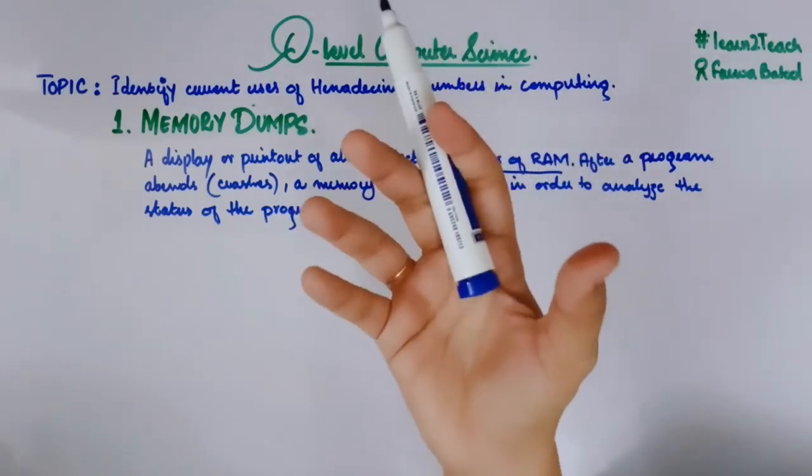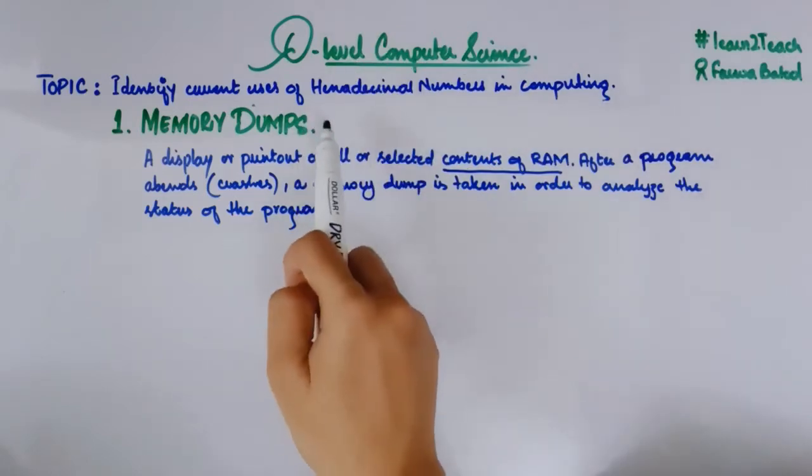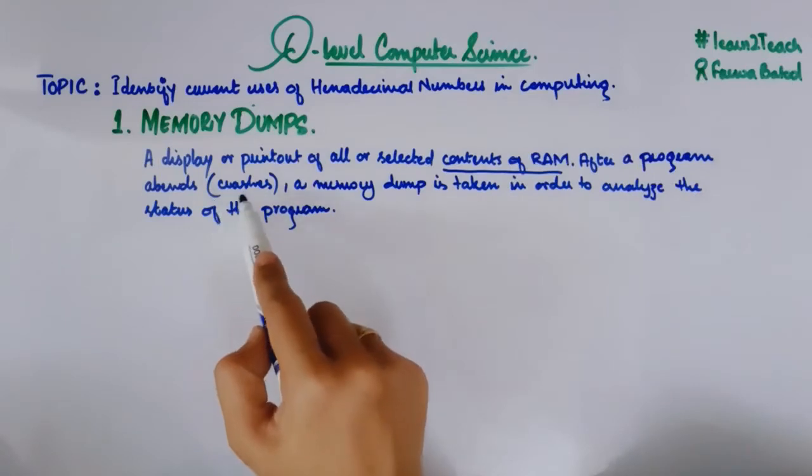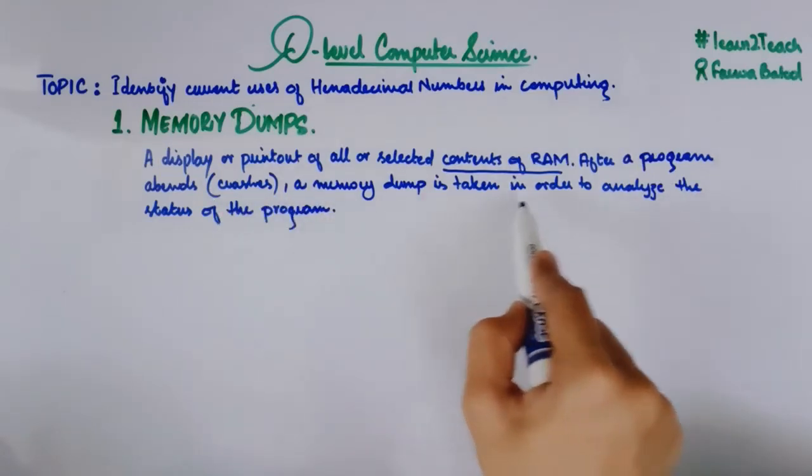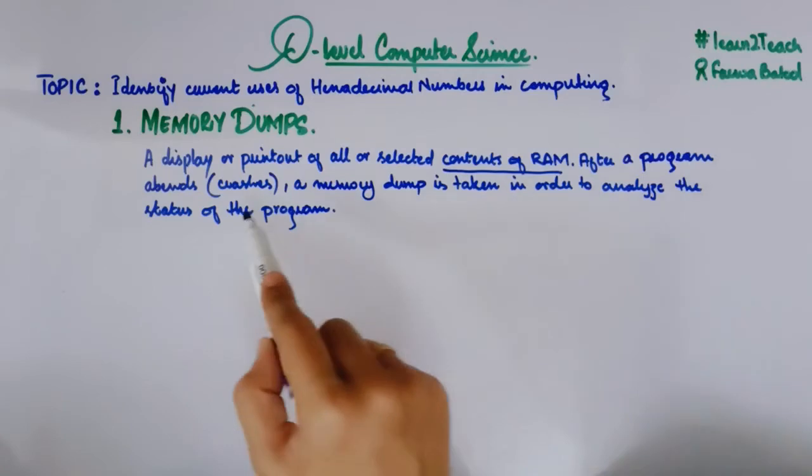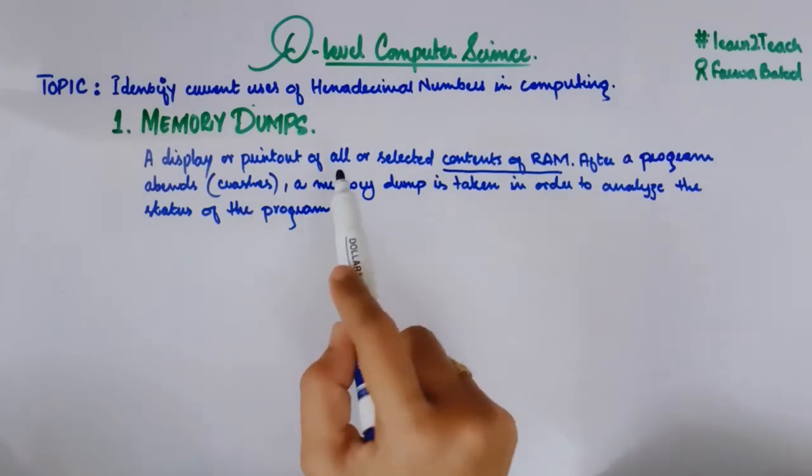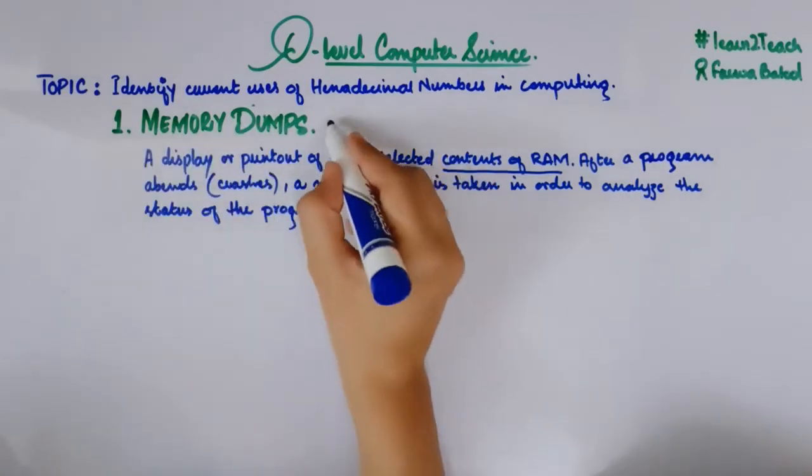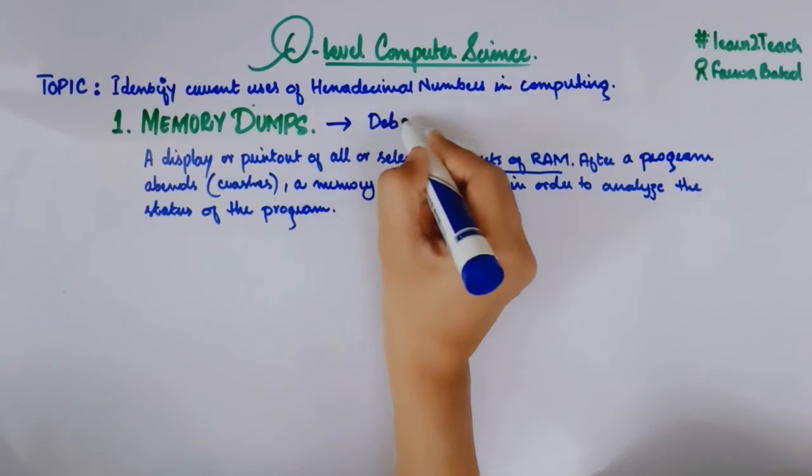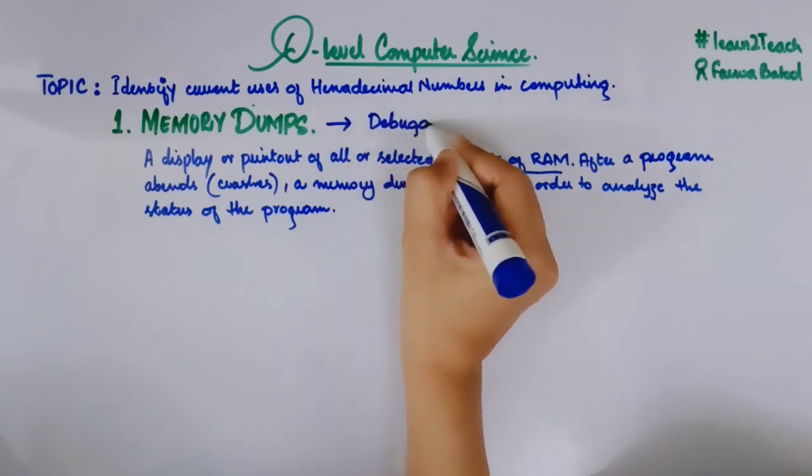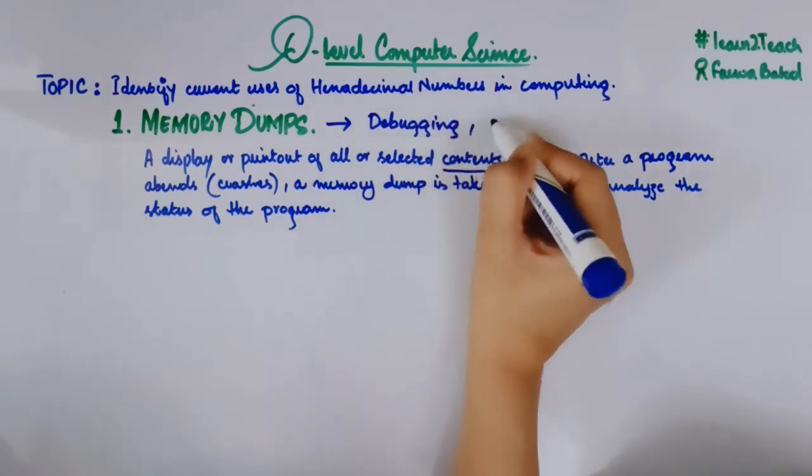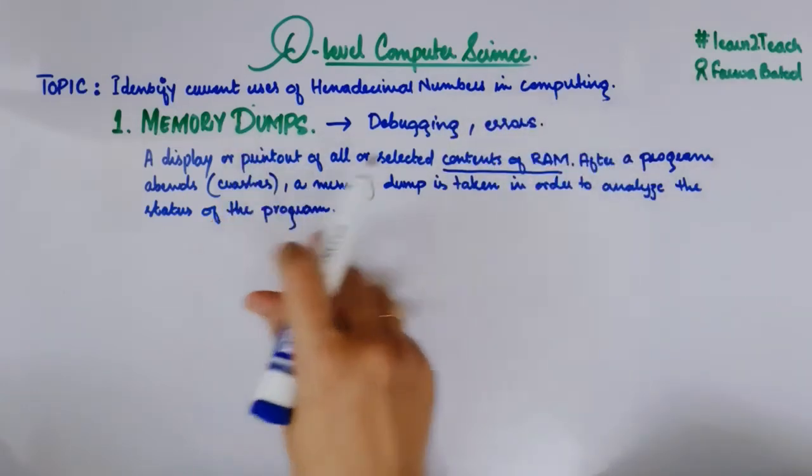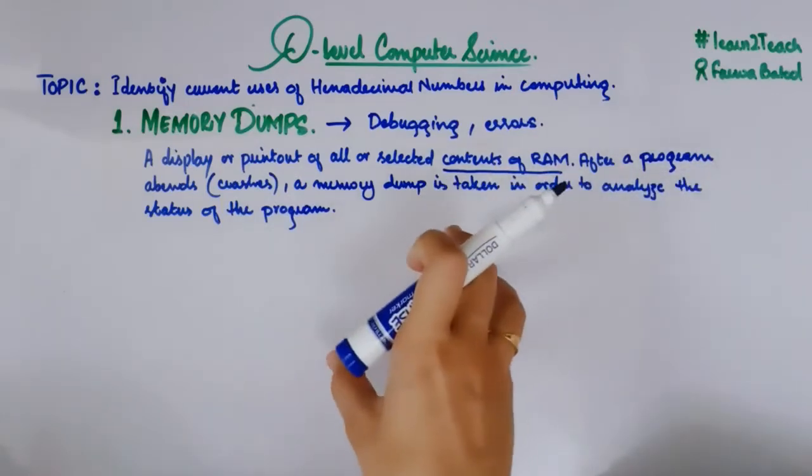When you have a display or a printout of something that is displaying the content that is stored in a memory, then that printout or that display of memory is basically called the memory dump. What next? After a program crashes, a memory dump is taken in order to analyze the status of the program. So why are these memory dumps basically used? They are used for debugging purposes and in order to trace the errors.